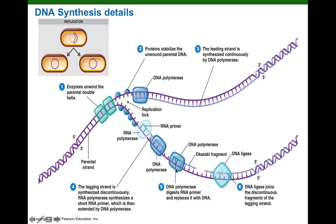The cell would then wait until the replication fork opens up a little bit wider and repeat the process. The primase would bind, synthesize a short RNA primer, and then DNA polymerase 3 would take over, synthesizing DNA.